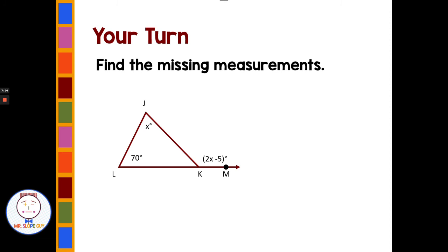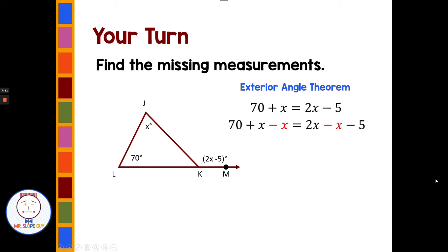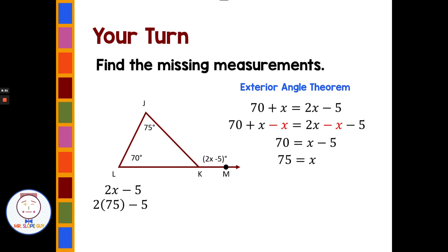Pause the video and see if you can find the missing measurements from the diagram. Welcome back. We have remote interior angles, so 70 plus x equals the exterior angle 2x minus 5. Subtract x from each side: 70 equals x minus 5. Add 5, and x is 75. Substituting back, 2 times 75 minus 5 is 145 degrees for the exterior angle.